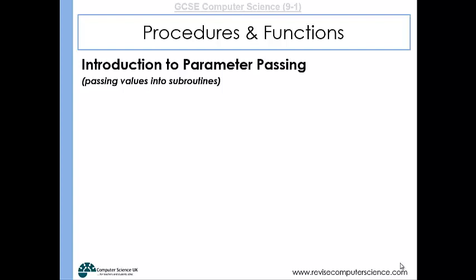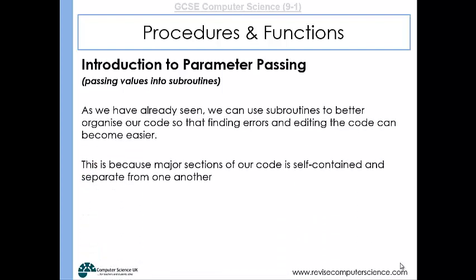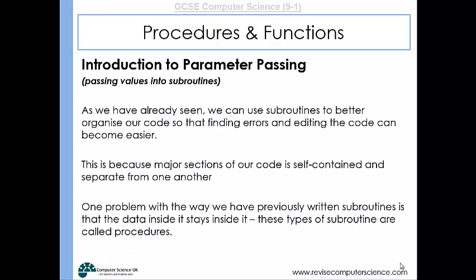Using global and local variables certainly has its place, but often we want to pass values from a variable into a subroutine and pass values back out — it makes for much more efficient coding. There's less chance of error by accidentally overwriting the value of a global variable somewhere. It's much better to pass a copy of a value into a procedure, work on that value, and then pass it back to the main program. So we'll look at parameter passing now — passing values into subroutines.